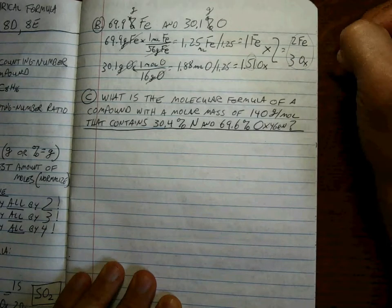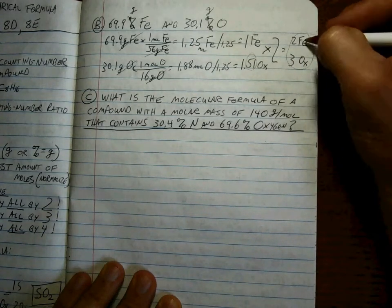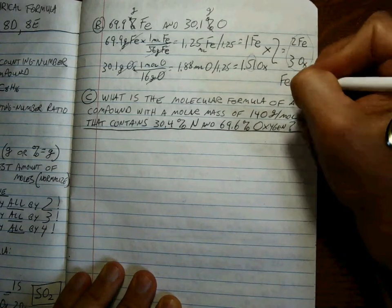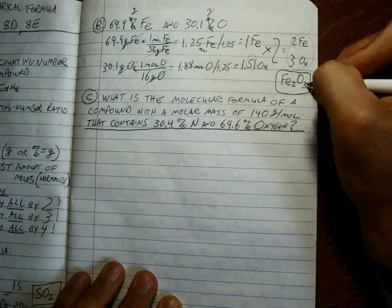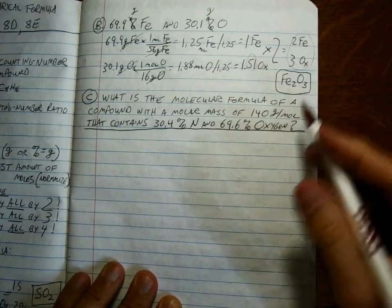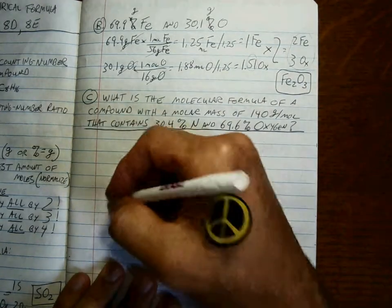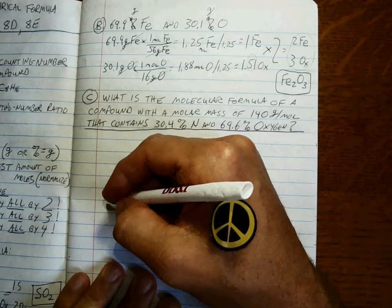Oxygens. So how do we write a formula for the compound with 2 Fe's and 3 oxygens? So it's Fe2O3. And that's the ratio. And that's the empirical formula. Piece of cake, right? Absolutely.